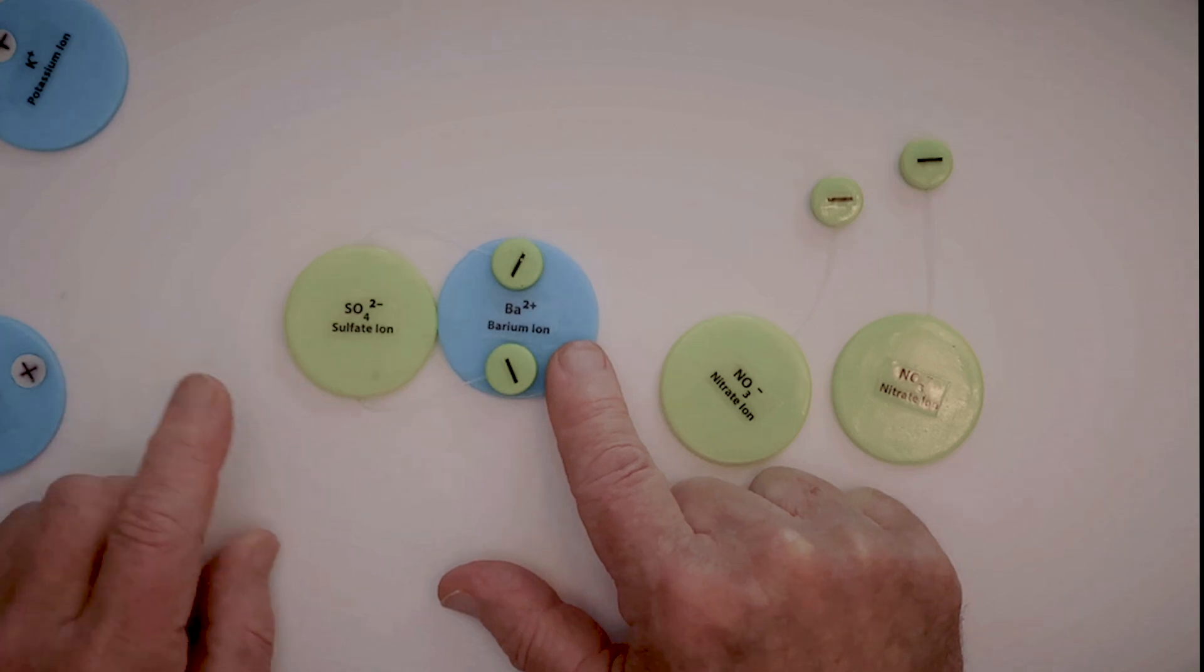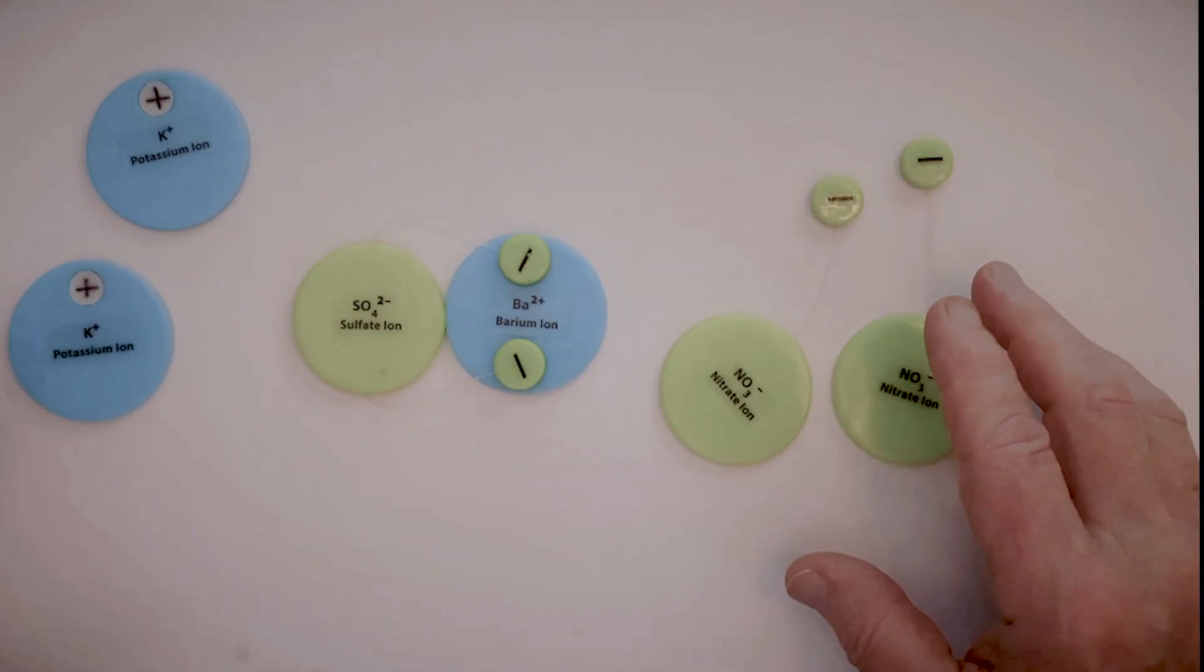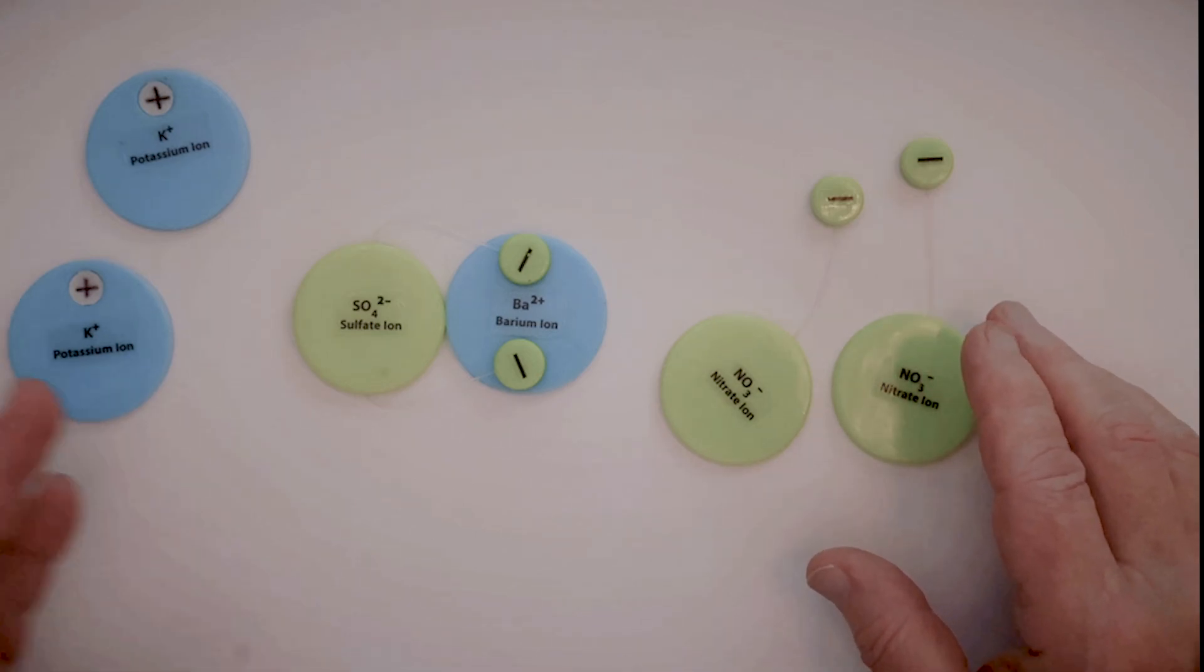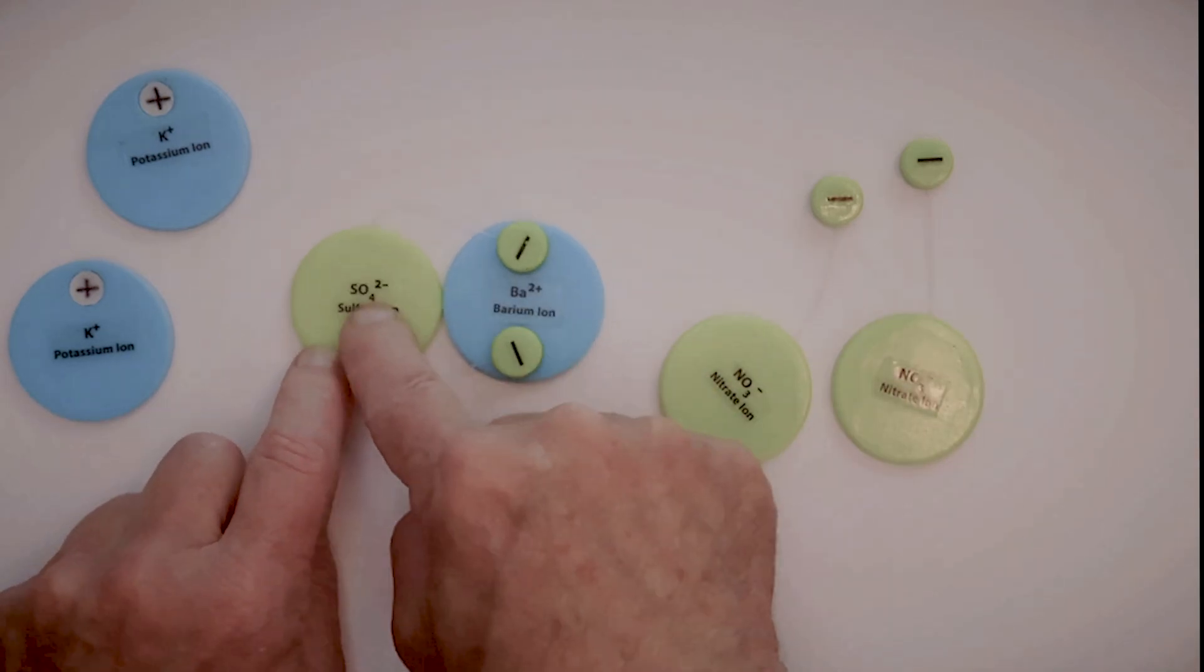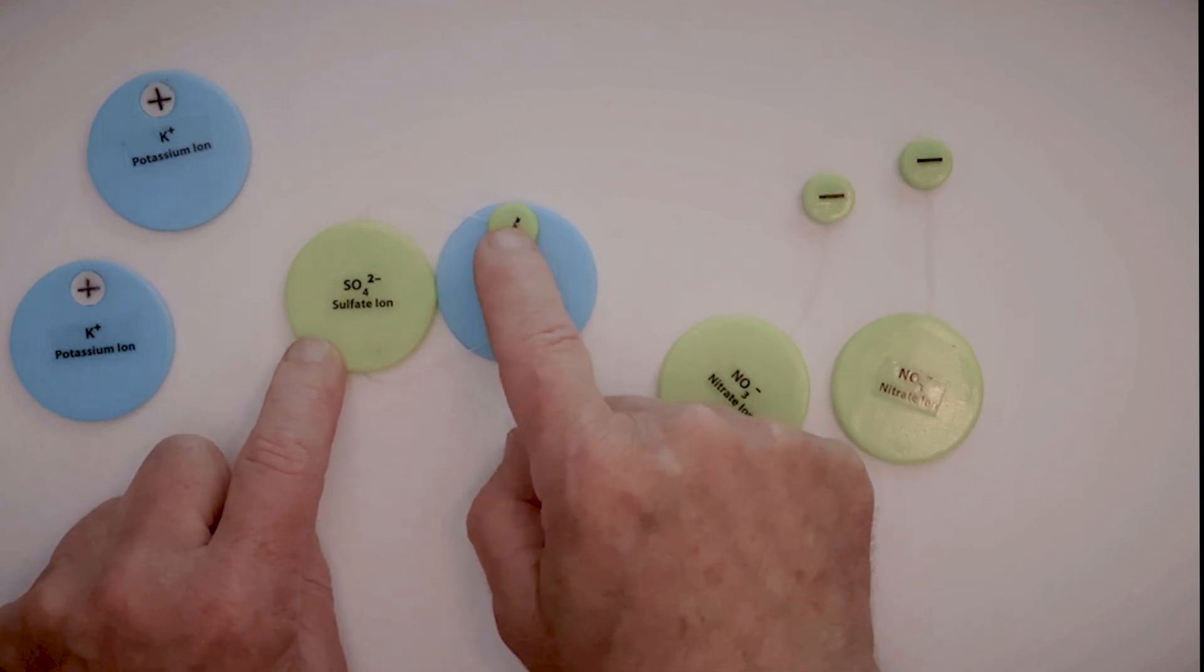It hates to be in the water. You see, these ions are surrounded by water molecules, and they prefer to be surrounded by water molecules more than with each other, except barium sulfate. The barium likes to be with the sulfate. It hates to be in the water.